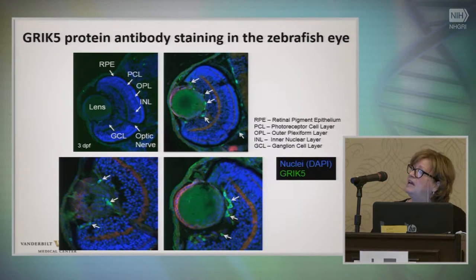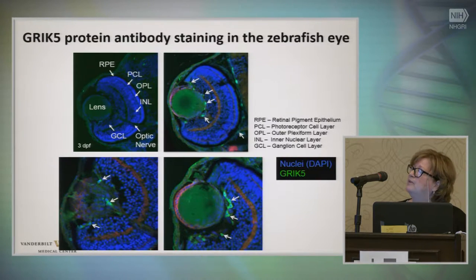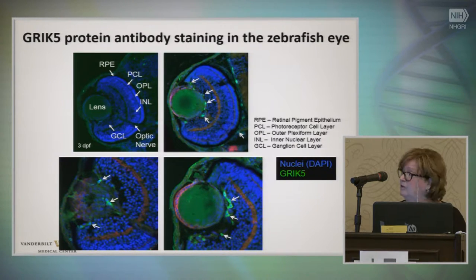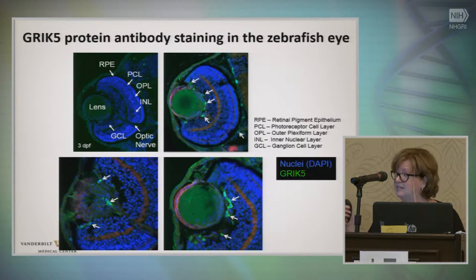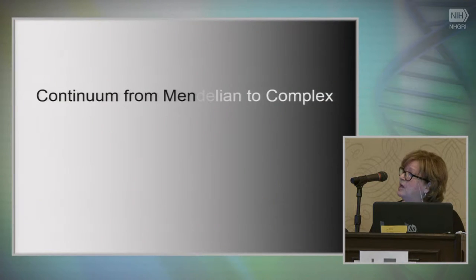If you then took antibodies to the protein product of GRIK5, you could see that the protein is indeed highly expressed in the parts of the eye that generate all of these different eye phenotypes. It's highly expressed in the lens — perhaps where you get the cataract — in areas that could lead to retinal detachment, and in cells that form the sheath around the optic nerve. The biology makes sense as you take it out into model systems.